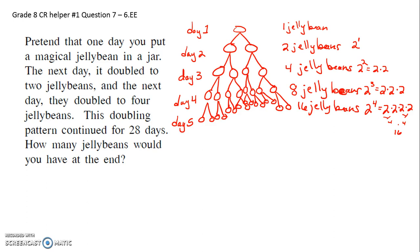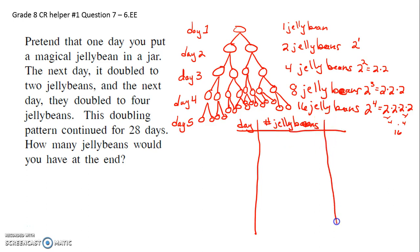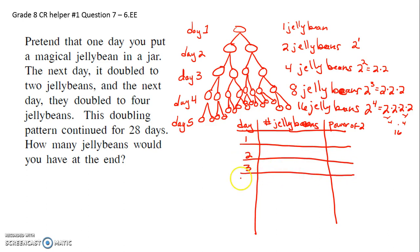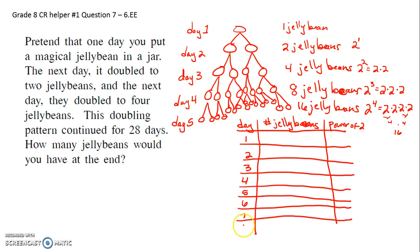We've got to go all the way to day twenty-eight though. So I'm going to start making a little table to make it easier. This column will be 'day,' this column will be 'number of jelly beans,' and I might also do 'power of two' to help myself. So day one, day two, day three, day four, day five, day six, day seven — dot dot dot — all the way to day twenty-eight. This is cray-cray.